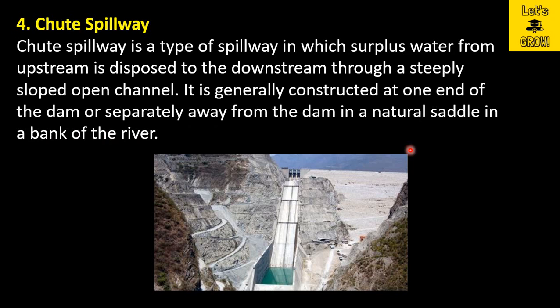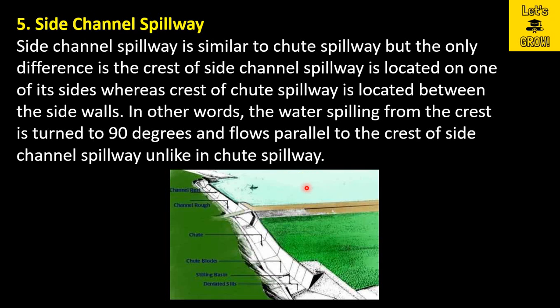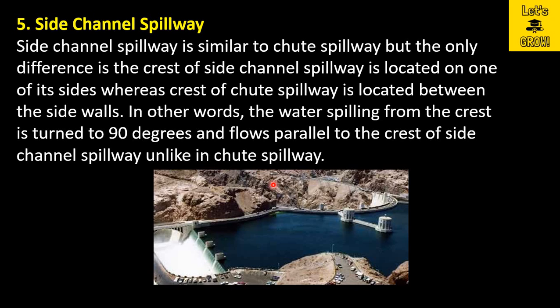This side channel spillway is quite similar to the chute spillway — the only difference is the direction. In a chute spillway, the water is released in the direction of the dam. But in case of a side channel spillway, the water will flow at 90 degrees to the direction of the dam or weir.